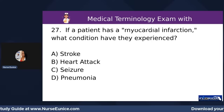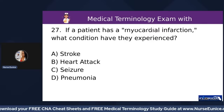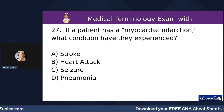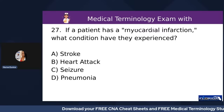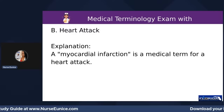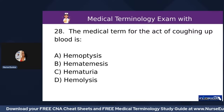Number twenty-seven: if a patient has a myocardial infarction, what condition have they experienced? A) stroke, B) heart attack, C) seizure, or D) pneumonia. 'Myo' refers to muscle, 'cardio' refers to the heart, and 'infarction' means loss of blood flow to an area, causing loss of oxygen and tissue death. Myocardial infarction is the medical term for heart attack — B is the correct answer.